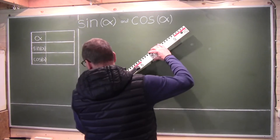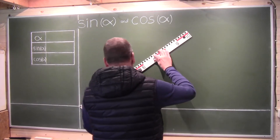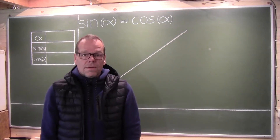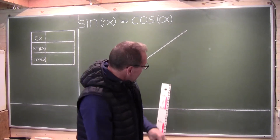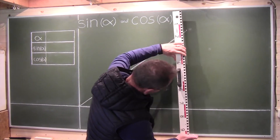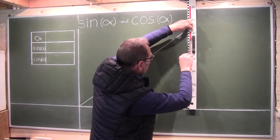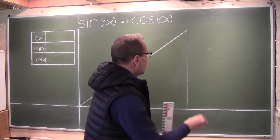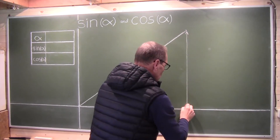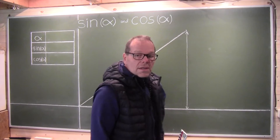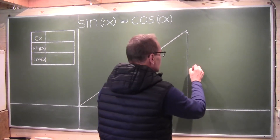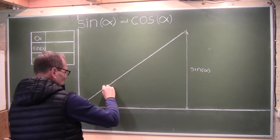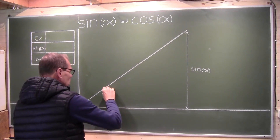If I take a 1-meter ruler and draw just any angle like this, then the sine of the angle is the portion I get here. This is simply the sine of this angle alpha.